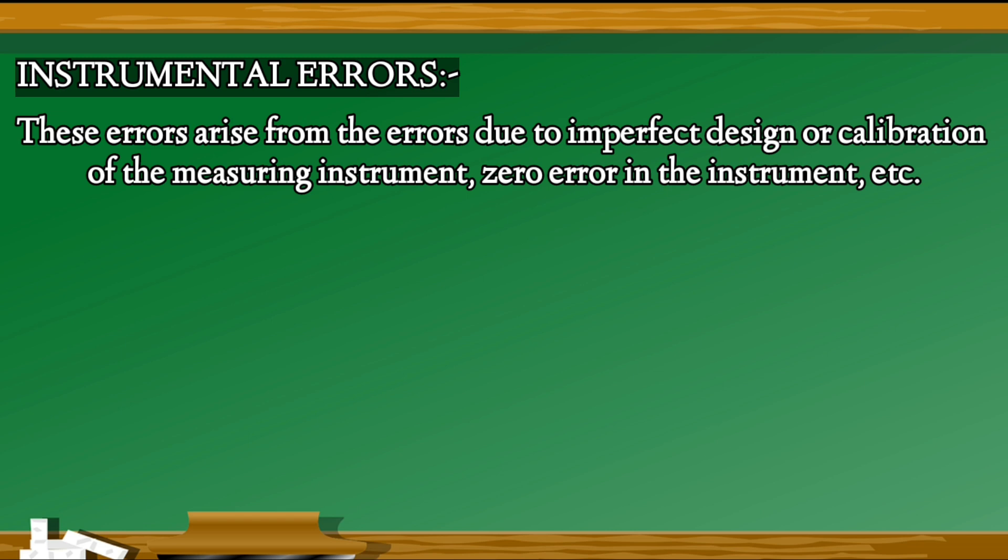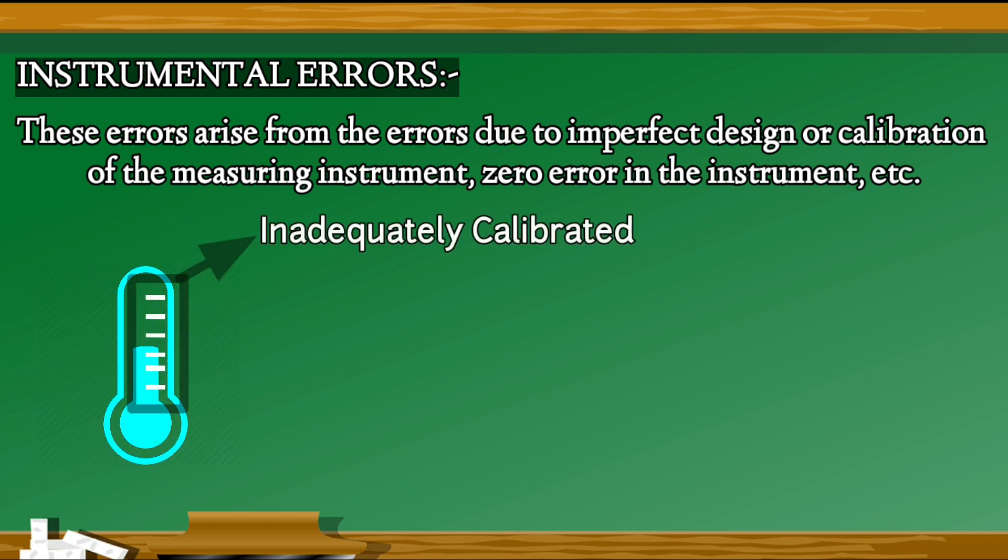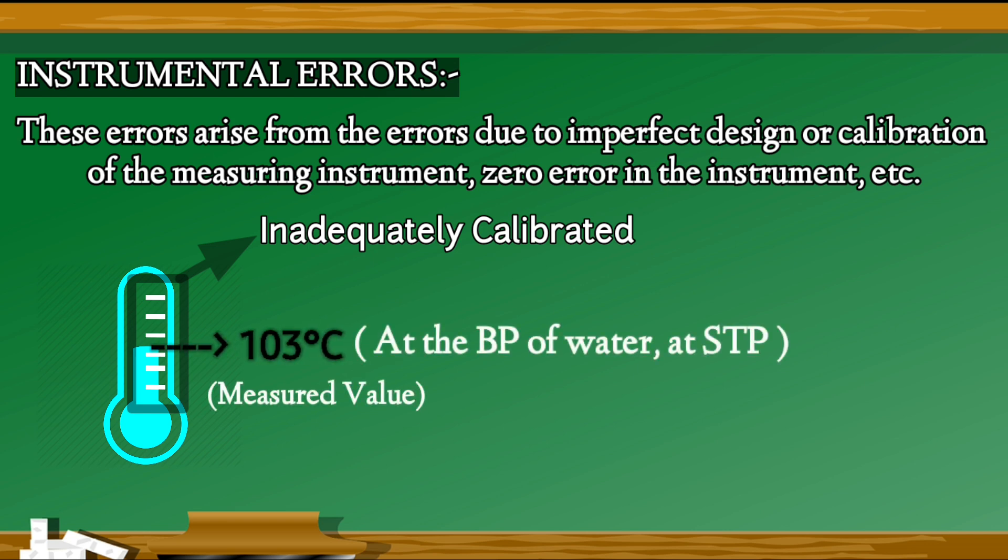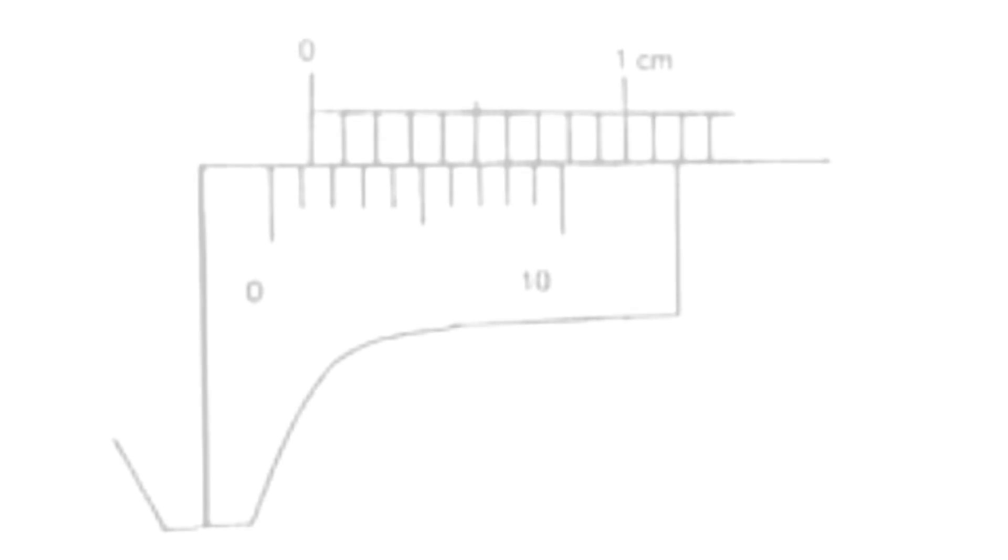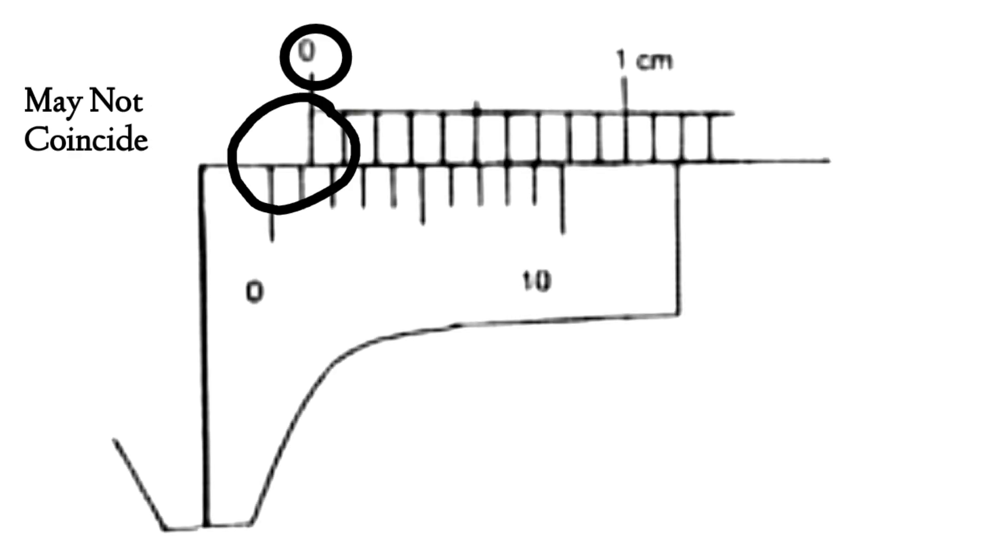For example, temperature graduations of a thermometer may be inadequately calibrated, because of which it may read 103 degrees Celsius at the boiling point of water at STP, whereas it should read 100 degrees Celsius. Another example for the instrumental error is in a vernier caliper, the zero mark of vernier scale may not coincide with the zero mark of main scale, or simply an ordinary meter scale may be worn off at one end.